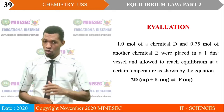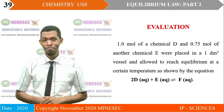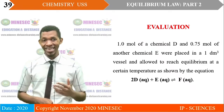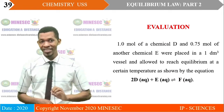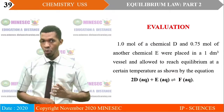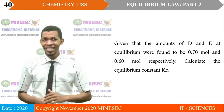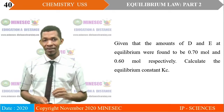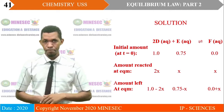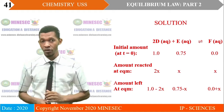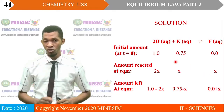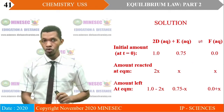Evaluation. To know how well you have followed this lesson, answer this question. 1 mole of chemical D and 0.75 moles of chemical E were placed in a 1 dm³ vessel and allowed to reach equilibrium at a certain temperature, as shown by the equation: 2D + E ⇌ F. The amounts of D and E at equilibrium were found to be 0.70 moles and 0.60 moles respectively. Calculate the equilibrium constant Kc.